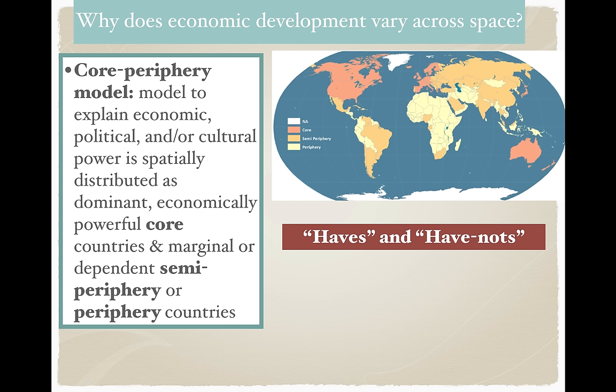More simplistically, there are core countries — the most developed countries of the world — who are economically powerful and dominant in world politics. And there are marginal or lesser developed countries, LDCs or developing countries, who are often dependent upon the core and simply do not have as much global power. Some people argue the world has haves and have-nots — people who have things and people who do not. That's an enormous generalization, but we'll work with the term as we apply it to world systems theory.